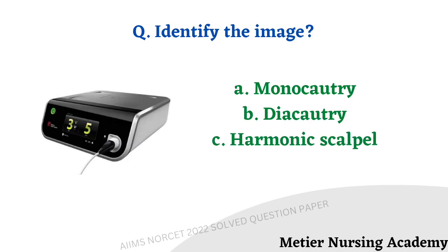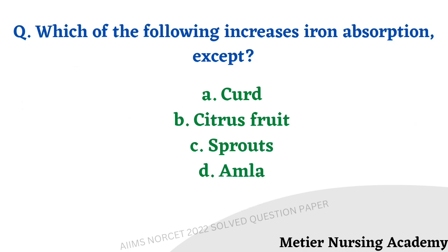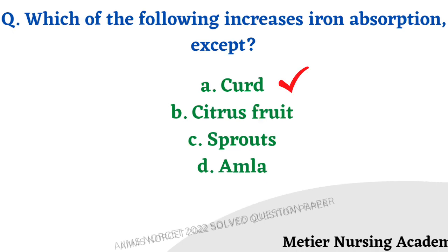The next image-based question: identify the image. Options: monocotry, diocotry, harmonic scalpel. The right answer is option C, harmonic scalpel. The harmonic scalpel is a surgical instrument that uses ultrasonic vibration to cut and cauterize tissues. Which of the following increases iron absorption, except? Options: curd, citrus fruit, sprout, amla. The right answer is option A, curd — curd does not increase iron absorption.